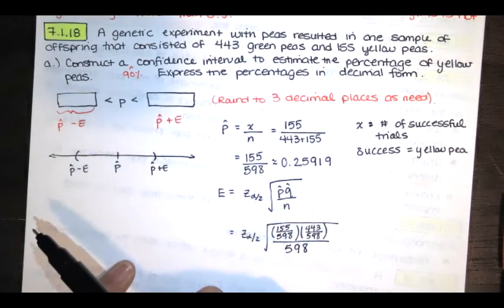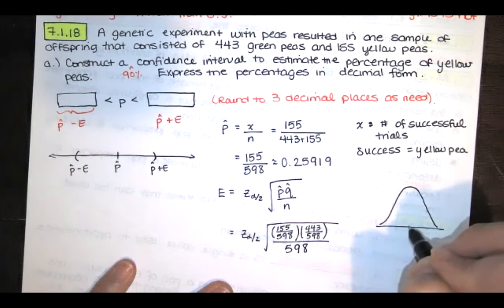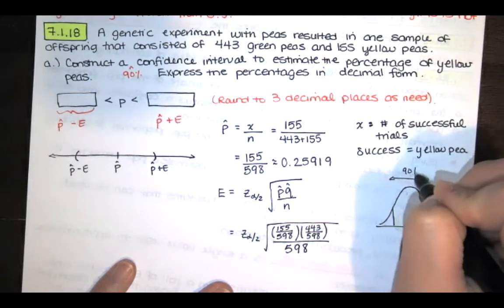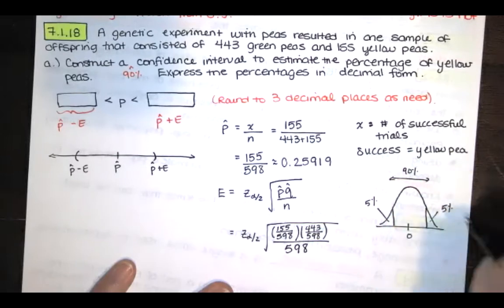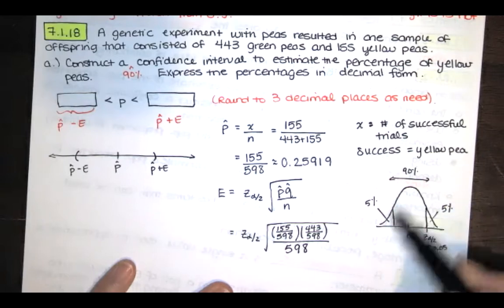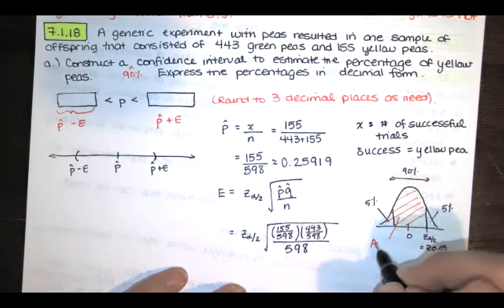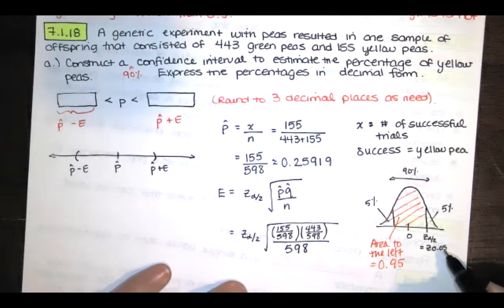We were told to construct a 90% confidence interval. I've got a normal distribution, a standard normal distribution. I want a 90% confidence interval, which means I want 90% of values in the middle here. That means I want 10% in the tails, but that's going to be split. I'll have 5% on the left and 5% on the right. Z sub alpha over 2, in this case, is z sub 0.05. It separates this top 5% from that bottom 95%. Since this area to the left is 95%, or in decimal form 0.95, I can find z sub 0.05 using my table of z scores.